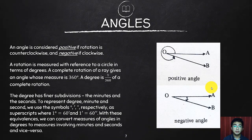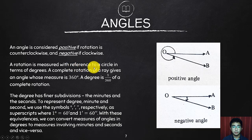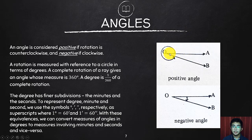An angle is considered positive if the rotation is counterclockwise. It's negative if it goes clockwise. These are the sign conventions we follow when solving for angles. A complete rotation of a ray gives an angle whose measure is 360 degrees. One degree, therefore, is one of 360 divisions of that rotation. The degree has finer subdivisions: minutes and seconds, represented by their respective symbols.